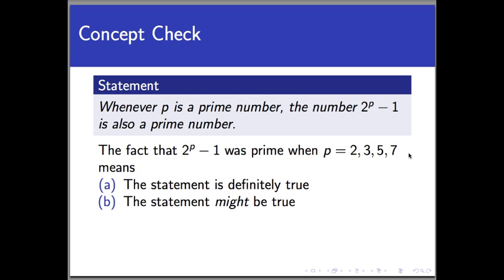So the correct answer here is B. The statement might be true, but we can't say that the statement is true for sure yet. Why not? Well, recall what the statement actually says. It says whenever P is a prime number, 2^P - 1 is also prime. That word whenever is all important. It is saying that every example of a prime number that we or anybody else could ever produce should work.